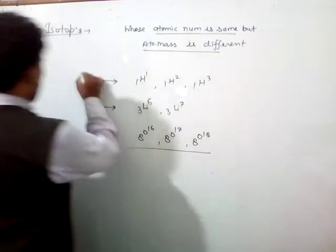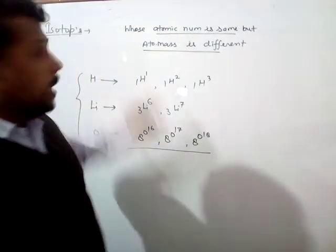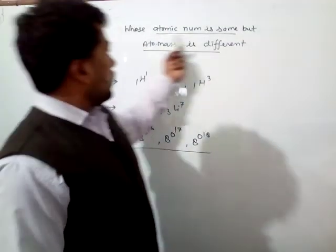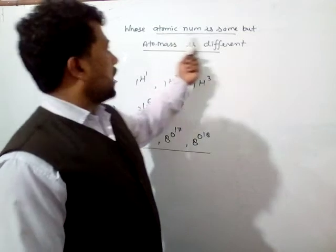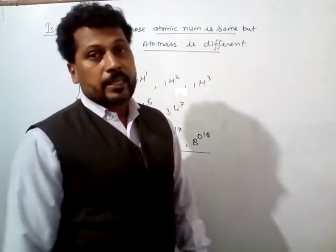So these are some examples of isotopes. So what's the isotopes? Isotopes for the same atom, those atoms whose atomic number is same but mass number is different, that's the isotopes.